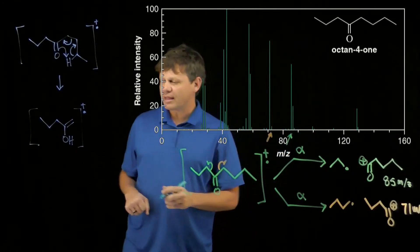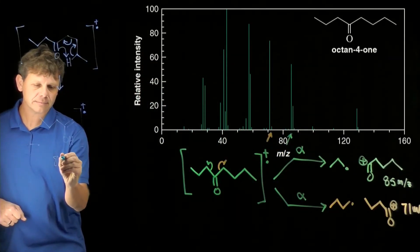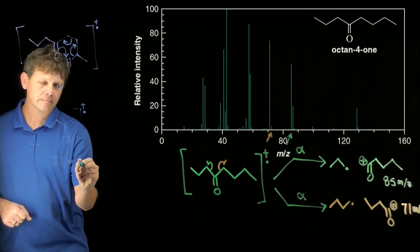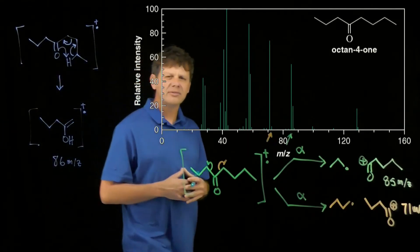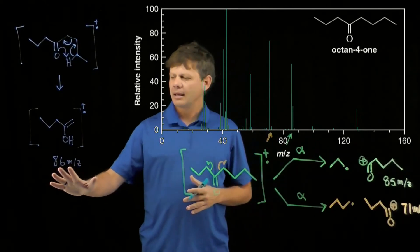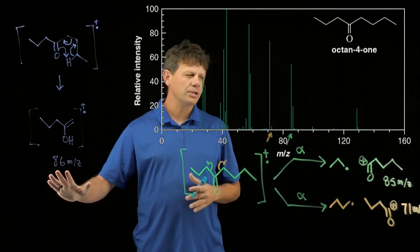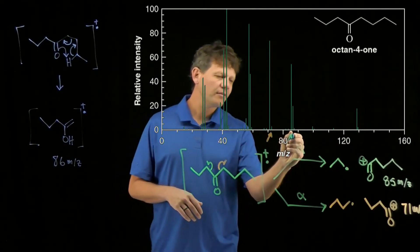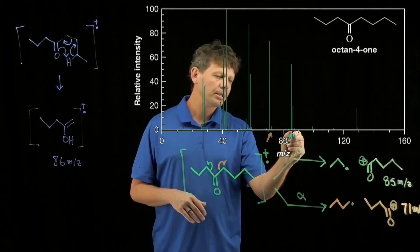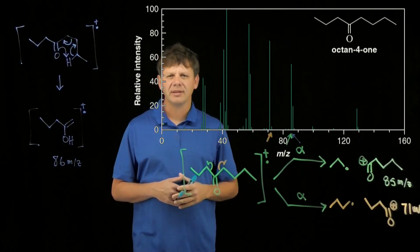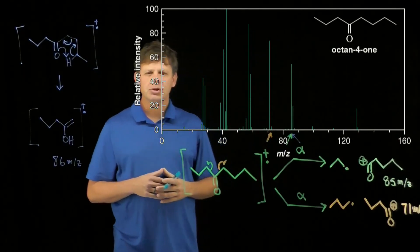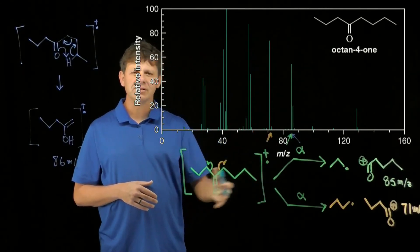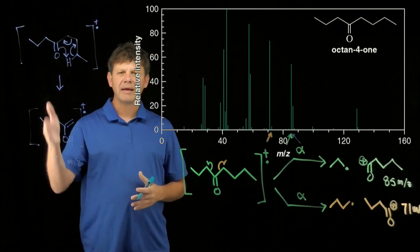And so the mass of this is 86, and so we would expect to see a peak at 86 mass to charge ratio. And if we look closely next to the one we identified earlier at 85, we do in fact have a peak that shows up at 86. So this spectrum shows both alpha cleavages and the McClafferty.